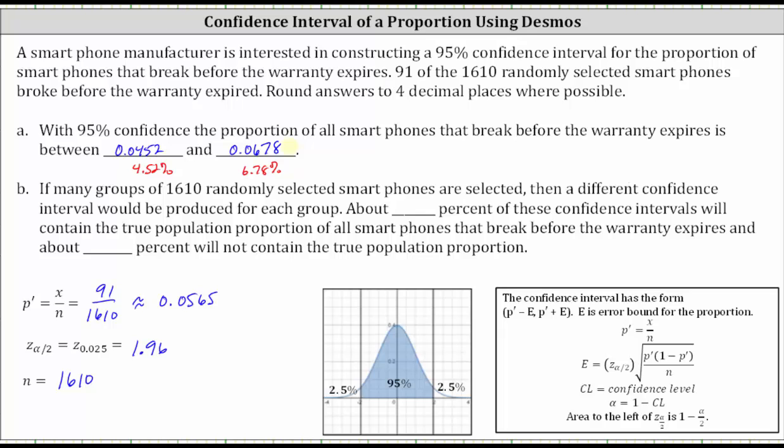To better understand the 95% confidence interval for part B, if many groups of 1,610 randomly selected smartphones are selected, then a different confidence interval would be produced for each group. About 95% of these confidence intervals will contain the true population proportion of all smartphones that break before the warranty expires. And about 5% will not contain the true population proportion.